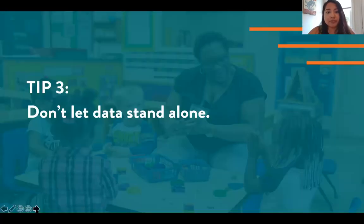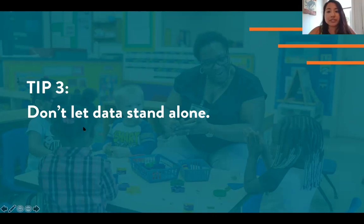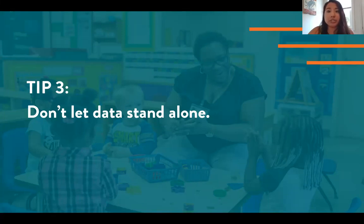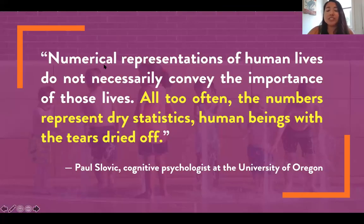We're digging down to the root causes, thinking about some of the structural barriers, and that can help us start to form our argument to advocate for action. Tip number three is: don't let data stand alone. There are two reasons for this. The first is that data is most effective at driving change when it can speak both to the head and the heart. Secondly, data without context can take on any meaning someone might ascribe. If we just have a raw statistic and we don't contextualize it or help folks see how different outcomes may be linked, we leave it open for interpretation — and we don't want to do that in advocacy.